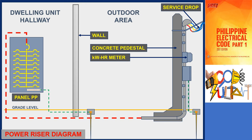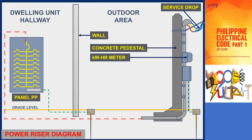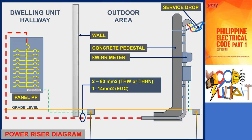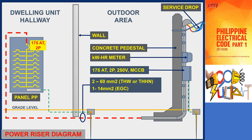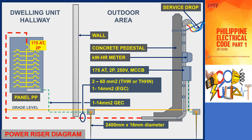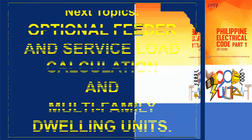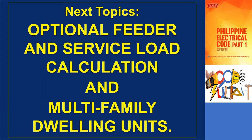Going back to the power riser diagram, the feeder and service entrance conductors consist of two 60 square millimeter THW or THHN conductors along with a 14 square millimeter conductor. For feeder protection, a 175-ampere trip, 2-pole, 250-volt rated molded case circuit breaker will be used. The same type of circuit breaker will be employed for the service equipment. The grounding electrode shall have a minimum length of 2.4 meters and a minimum diameter of 16 millimeters. Thank you for tuning in. In our next topics, we will discuss optional feeder and service load calculation and electrical system design for multifamily dwelling units.